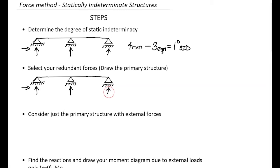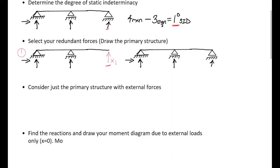Let's draw the several options we have. Since we have one degree of static indeterminacy, we only pick one redundant force. First option: I took this reaction force as my redundant. Second option: I can remove this other reaction here and take that as the redundant force, calling it x1. That is my second option.